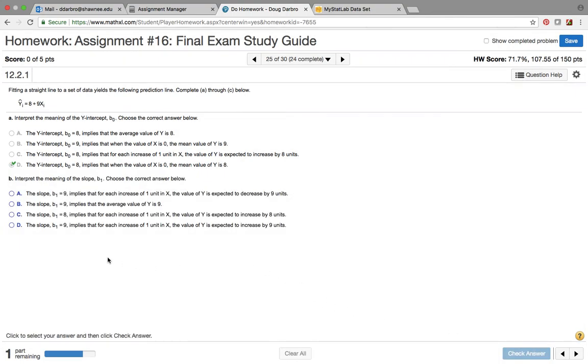Interpret the slope. The slope is 9, so the 9 says as we increase one unit in x, the value of y is expected to increase by 9. If it had been a negative number it would have decreased by 9.